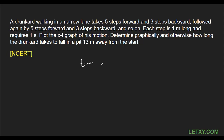I'm going to write down the coordinates: time measured in seconds and distance in meters. At the beginning, when time equals zero seconds, distance is zero meters. Next, he takes five steps forward. Since each step takes one second and covers one meter, after five steps the distance is five meters and the time is five seconds.